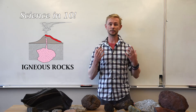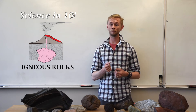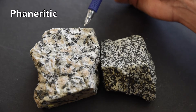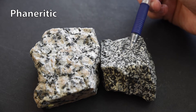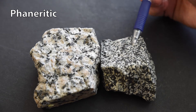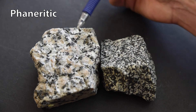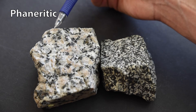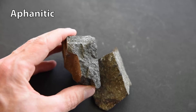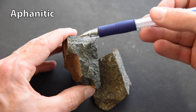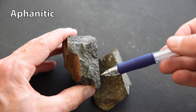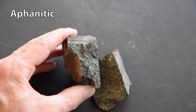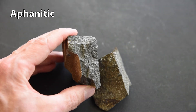Here are the main types of igneous textures and what they record about a rock's crystallization history. Phaneritic rocks are composed entirely of macroscopic, visible crystals, reflecting slow crystallization of the melt and allowing large mineral grains to form. Phaneritic rocks are almost exclusively intrusive. Aphanitic rocks are composed entirely of microscopic, invisible-to-the-naked-eye crystals, indicative of very rapid crystallization common to extrusive igneous rocks or intrusions that crystallize rapidly near the Earth's surface.